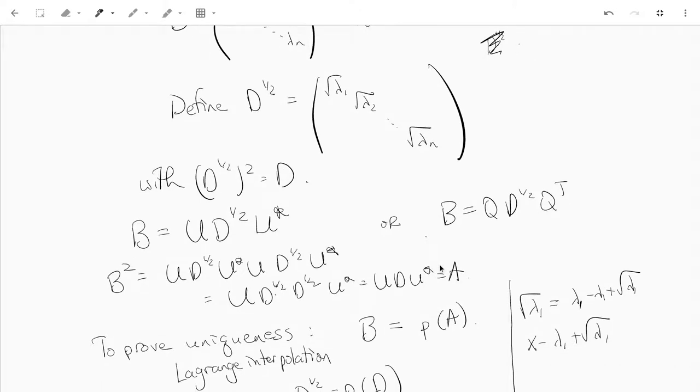To prove uniqueness, we need to do something called Lagrange interpolation to write our square root as a polynomial in A.